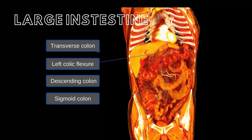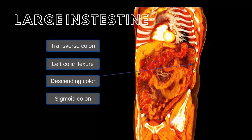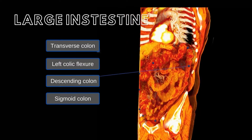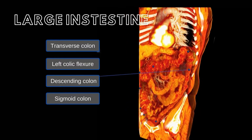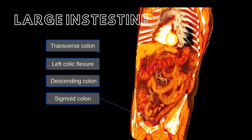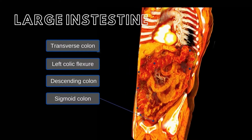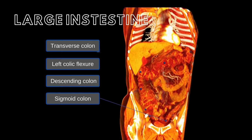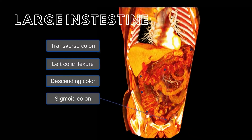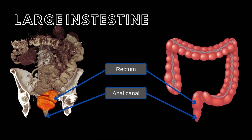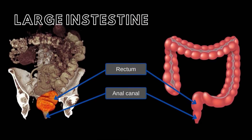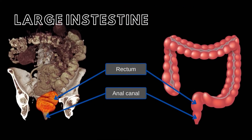The descending colon begins at the left colic flexure and ends at the sigmoid colon. The S-shaped sigmoid colon is continuous proximally with the descending colon and distally with the rectum. The rectum and the anal canal are the terminal portions of the colon.